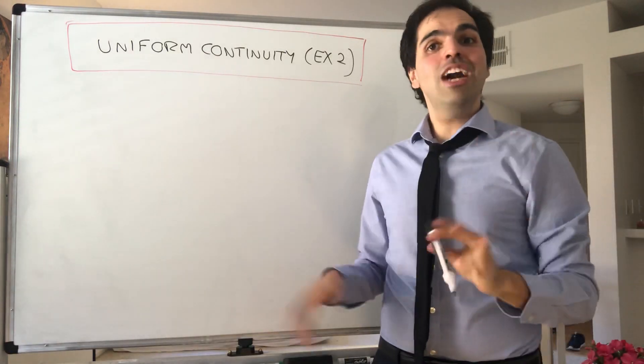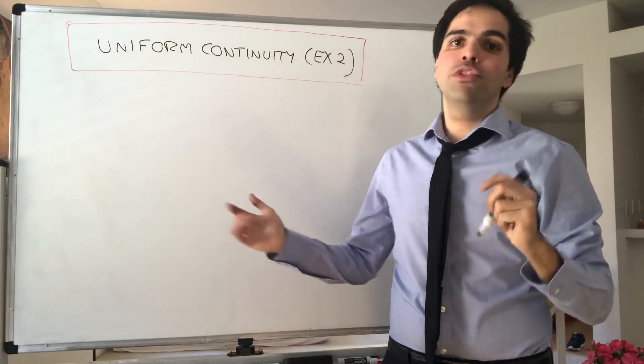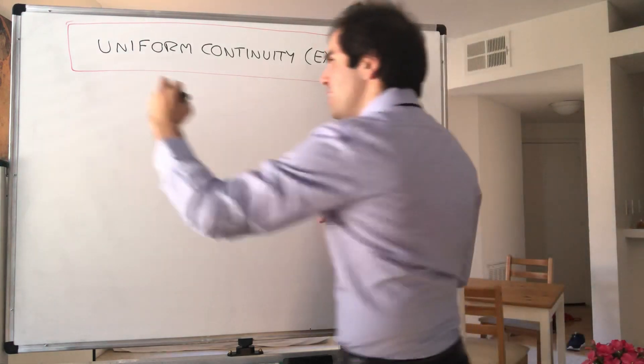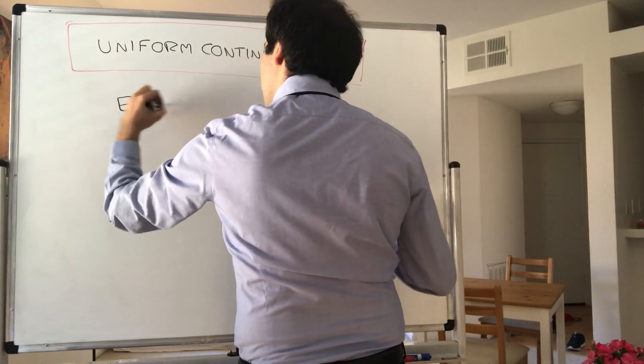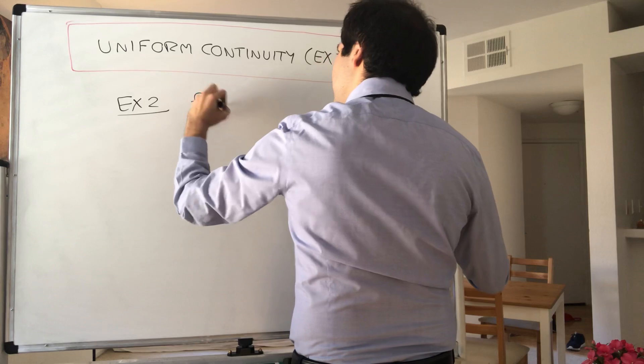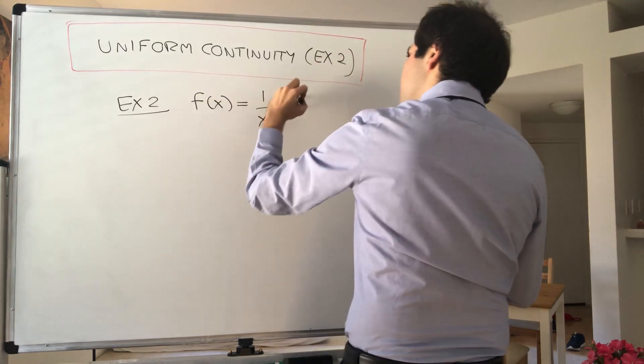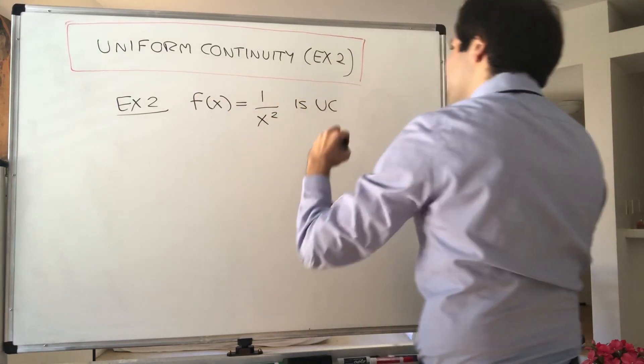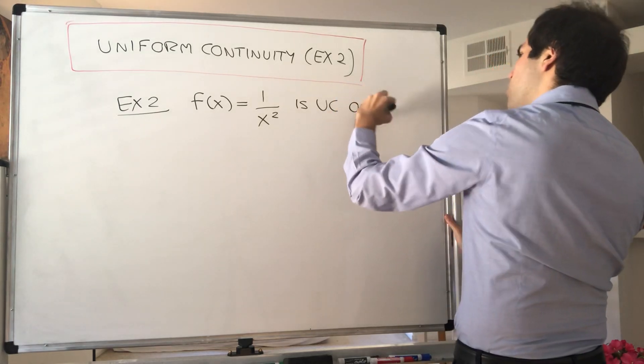All right, thanks for watching. Today I want to give you a second example of uniform continuity by showing that f of x equals 1 over x squared is uniformly continuous on the interval.